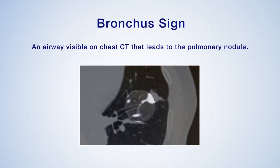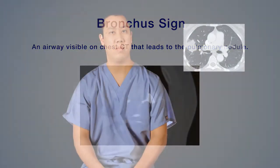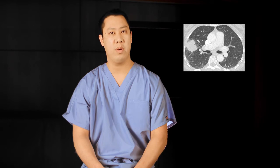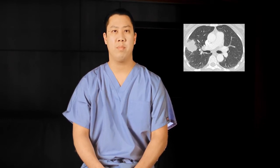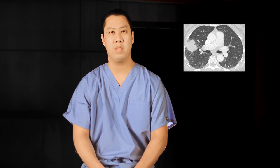A bronchocine is an airway visible on chest CT that leads to the pulmonary nodule and may provide the bronchoscopist with additional information that assists with bronchoscopy planning. The absence of a bronchocine does not indicate that an airway does not go directly to the peripheral lesion — it simply indicates that these smaller airways were not identified on chest CT. In this patient, the pulmonary nodule was felt to be accessible using bronchoscopy and the patient provided informed consent to proceed with the procedure.